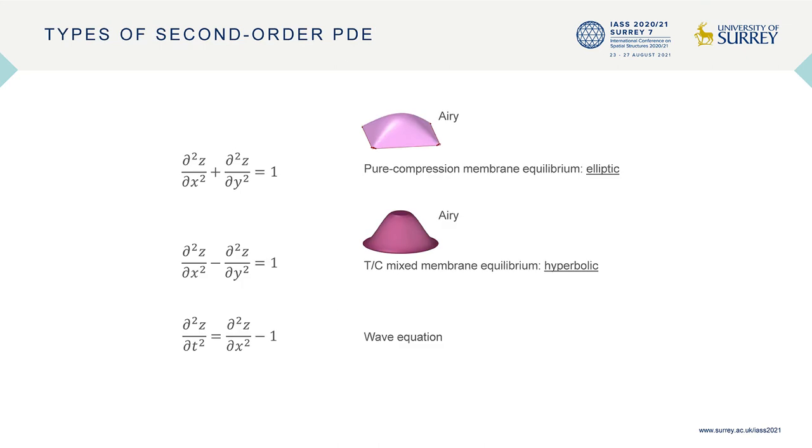Basically, pure compression is elliptic, which is easy to solve. However, tension-compression mix is hyperbolic, which is trickier to solve than an elliptic one. By flipping the sign of one term in the equation, the nature of the problem changes dramatically.